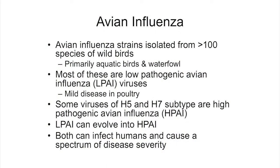When we think about avian flu, avian flu strains can be isolated from more than 100 different species of wild birds, primarily aquatic birds like gulls and waterfowl — ducks, swans, and similar birds. Most of these are what we call low pathogenic avian influenza, or LPAI, meaning they typically cause only mild disease in birds. But some strains, particularly H5 and H7 subtypes, are high pathogenic avian flu, or HPAI, associated with more severe disease in birds and potentially in humans.